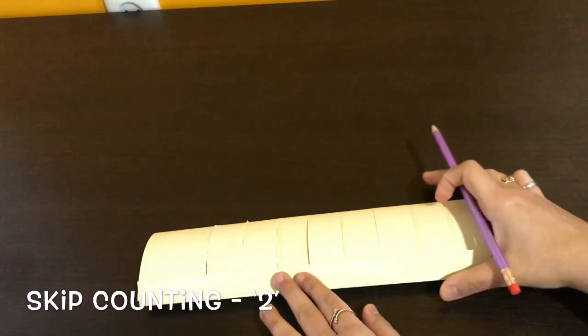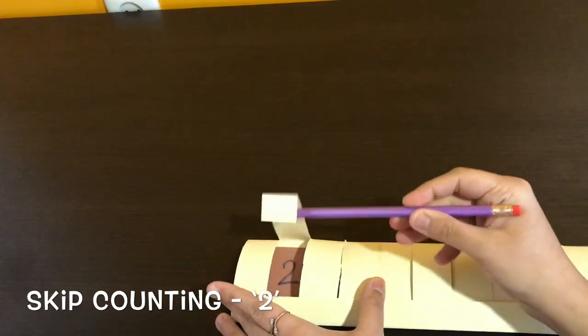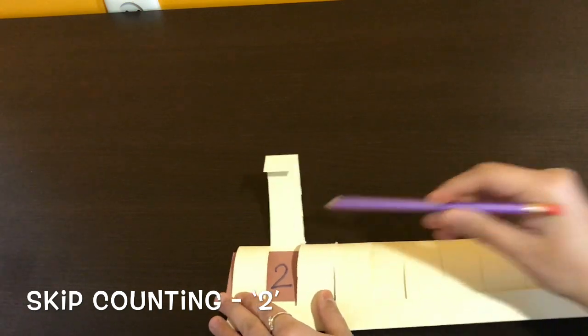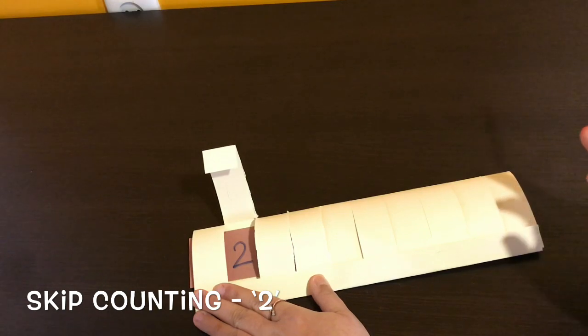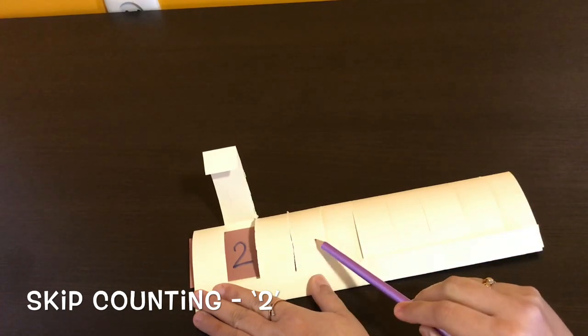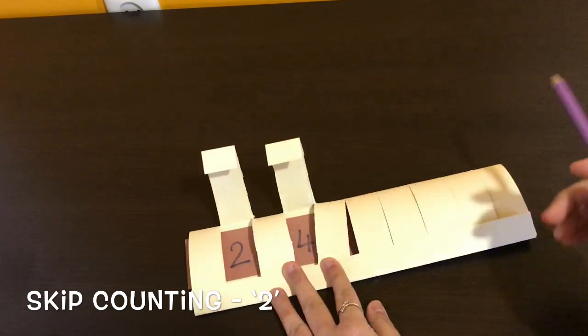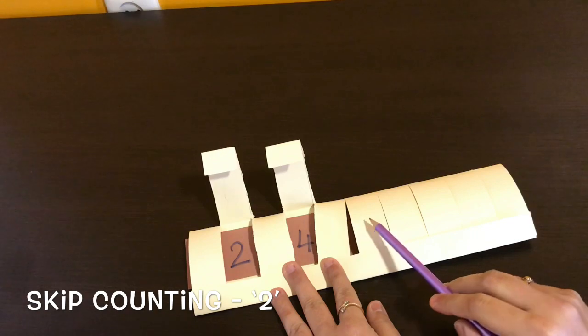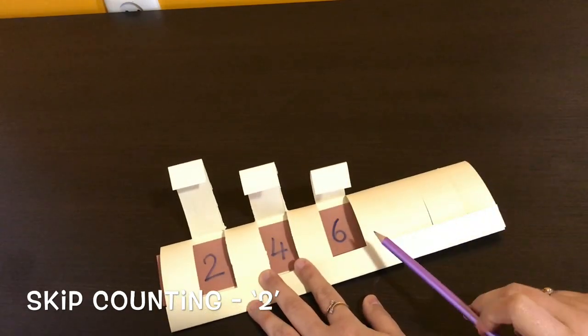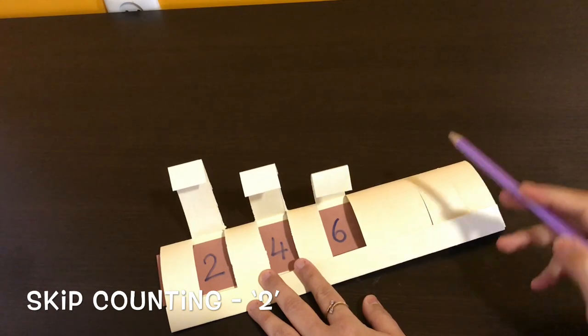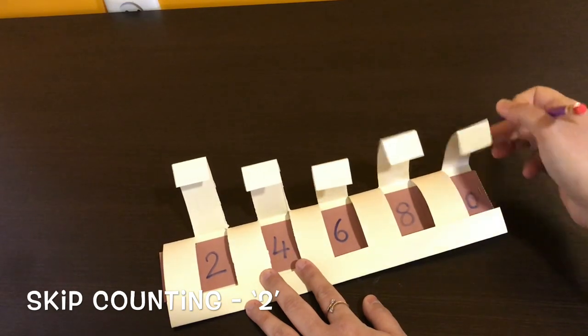So I have a pencil over here, and I say 2. So of course I know 2 is present under this particular flap. So it is number 2. And now I tell the child, we have to skip count with 2. 1, 2. Open the flap, you have number 4. So let's skip again. 1, 2. Open the flap, you have number 6. 1, 2. You have 8. And again, 10.